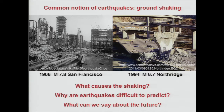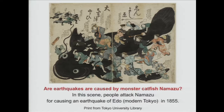What causes the shaking? Why are earthquakes difficult to predict? And if earthquake prediction is difficult — and some say impossible — what can we say about the future? The theories of why earthquakes and shaking occur date way back. This is one theory coming from 19th-century Japan — they believed there is a giant catfish, Namazu, living under the island, who periodically shakes it, and here people are trying to punish it for the earthquake in Tokyo in 1855.